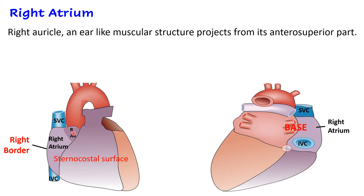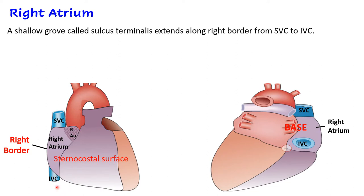There is an ear-like muscular appendage known as the right auricle, which projects from the anterior superior part of the right atrium, overlaps the root of the ascending aorta, and reaches the pulmonary trunk. There is also a shallow groove along the right border extending from the superior vena cava to the inferior vena cava, known as the sulcus terminalis. On the inner aspect at the same position there is a crest known as the crista terminalis.